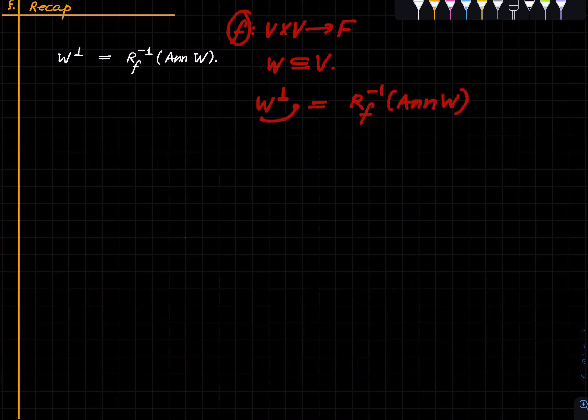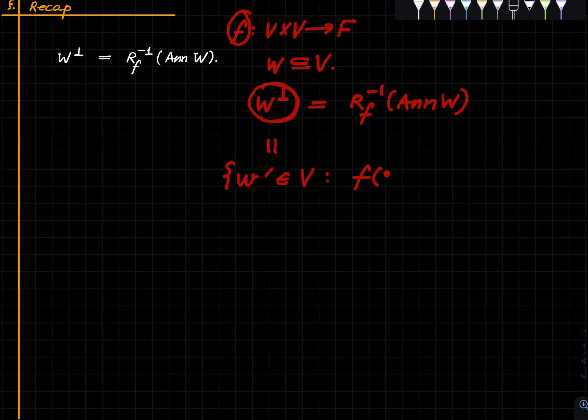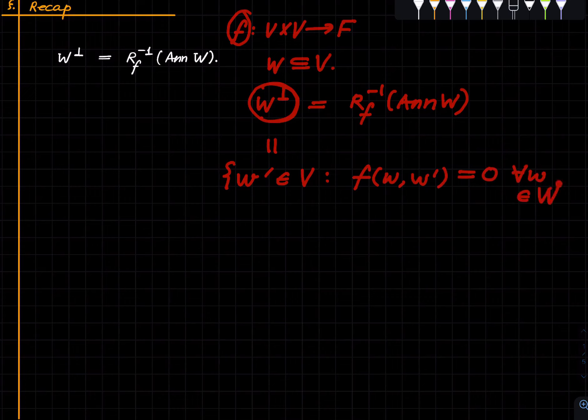Recall what W perp is: all those W prime in V such that F(W', W) is zero for all W in the subspace W.